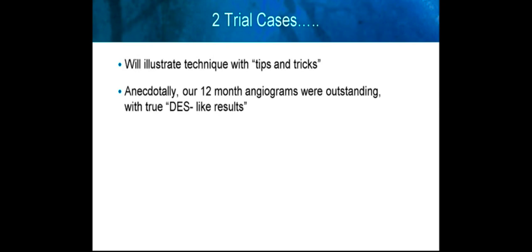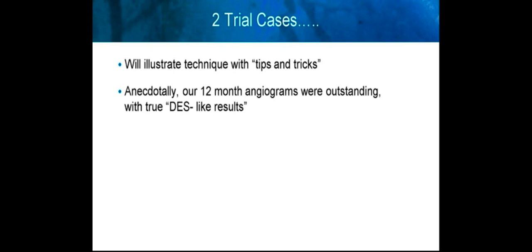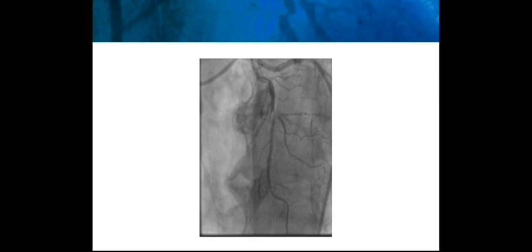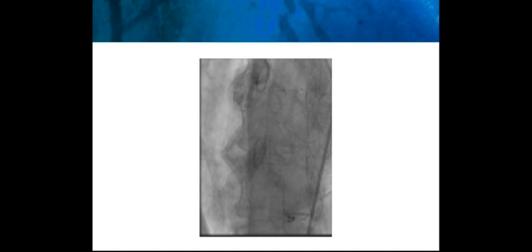Two trial cases from the pivotal trial will be shown with teaching points about the Triton device, addressing whether it can give drug-eluting stent-like results in bifurcations. Anecdotally, for the pivotal trial, 12-month angiograms were mandated and we saw a lot of drug-eluting stent-like results even at 12 months. Here's case one — an LAD diagonal bifurcation seen in AP cranial view and LAO cranial view — with a high-grade lesion in both the LAD and in the diagonal.